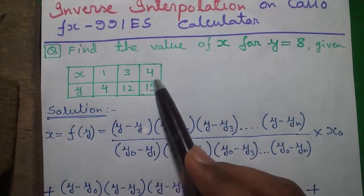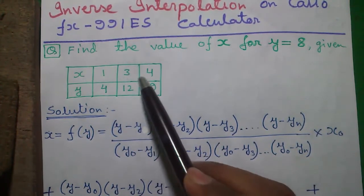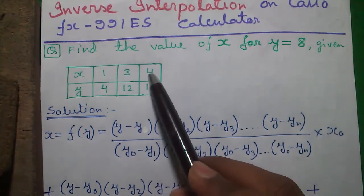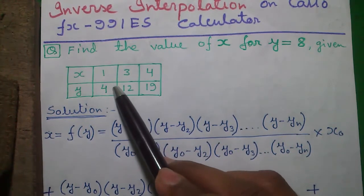And here is our question: for y equals to 4, x equals to 1; for y equals to 12, x equals to 3; and for y equals to 19, x equals to 4. So we have to find out what is the value of x for y equals to 8.